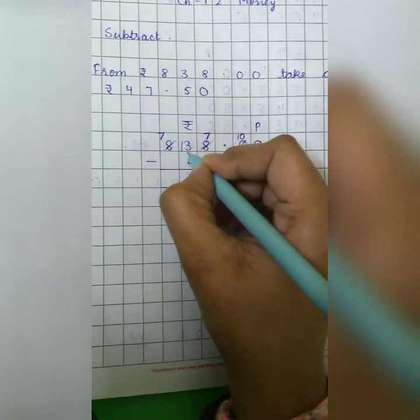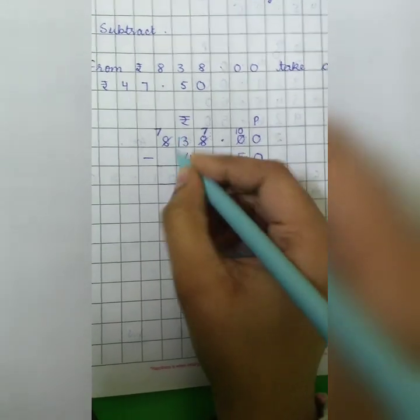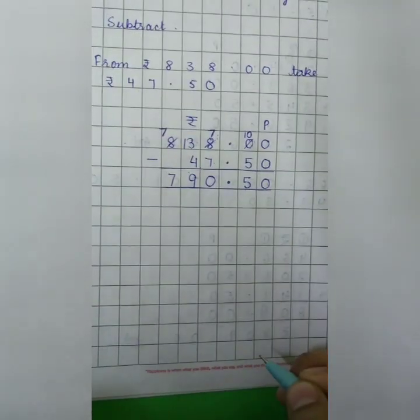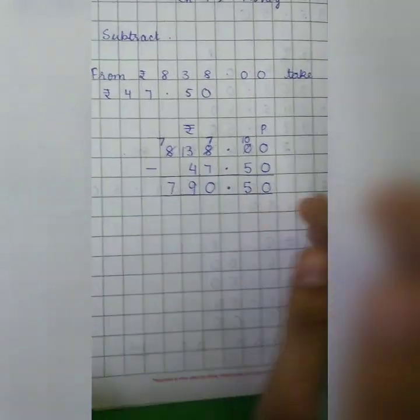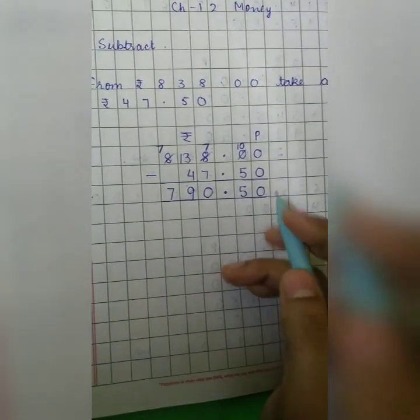So this 3 will borrow 1 from the next number 8. It will become 13. 13 minus 4 is 9 and 7 will be written as it is. So what will we get? We will get 790 rupees and 50 paise.